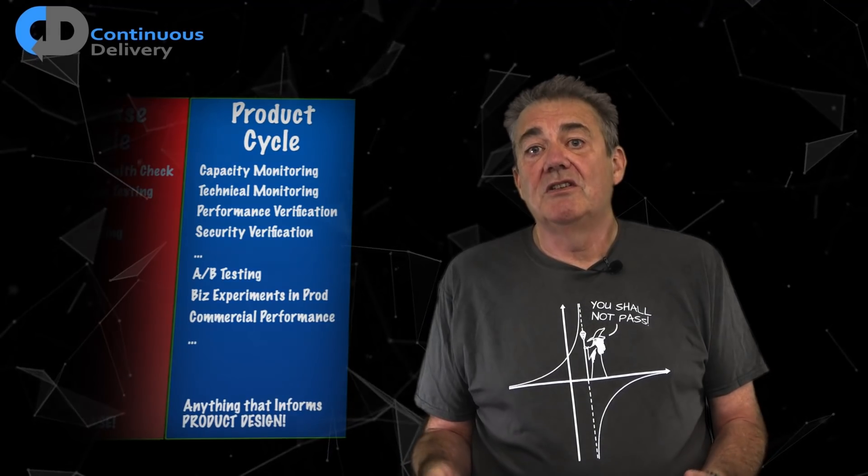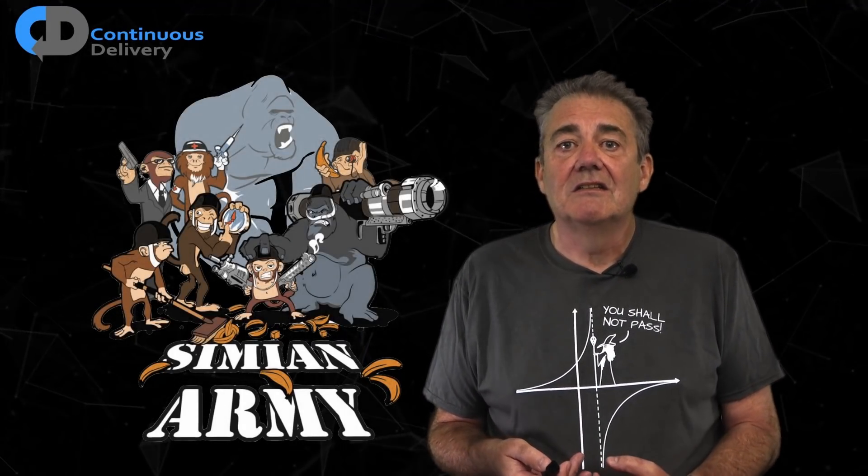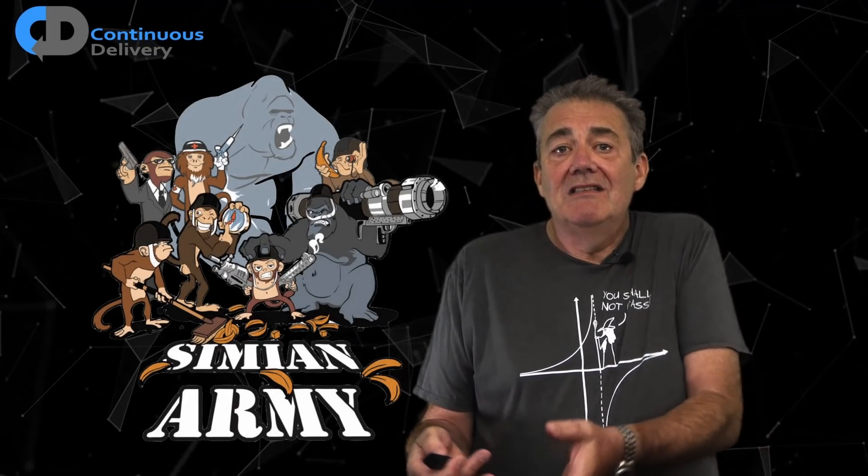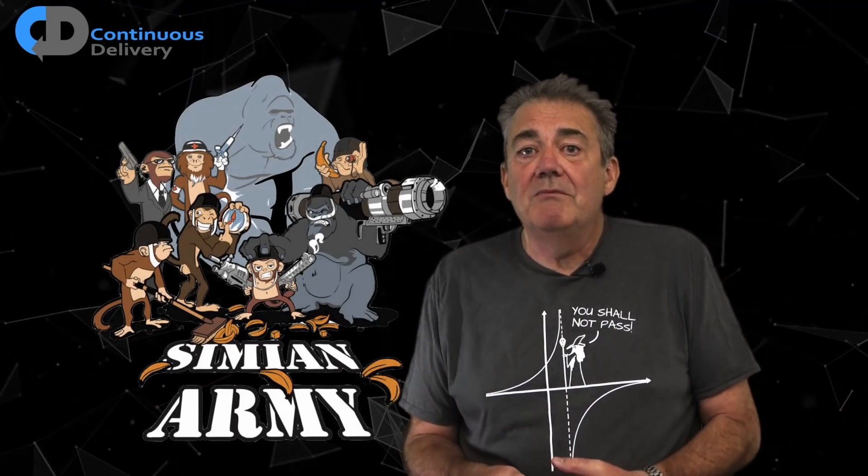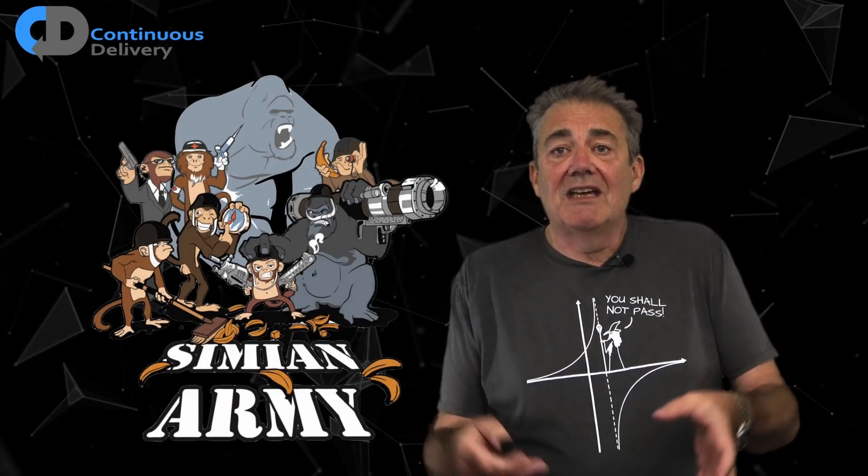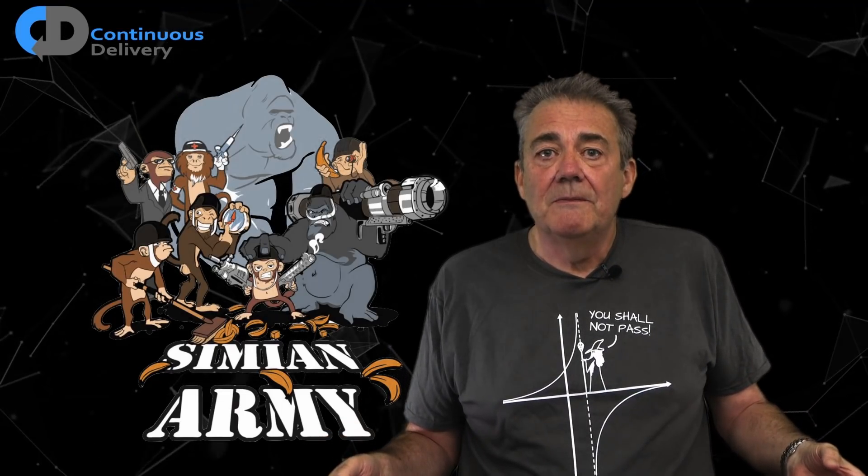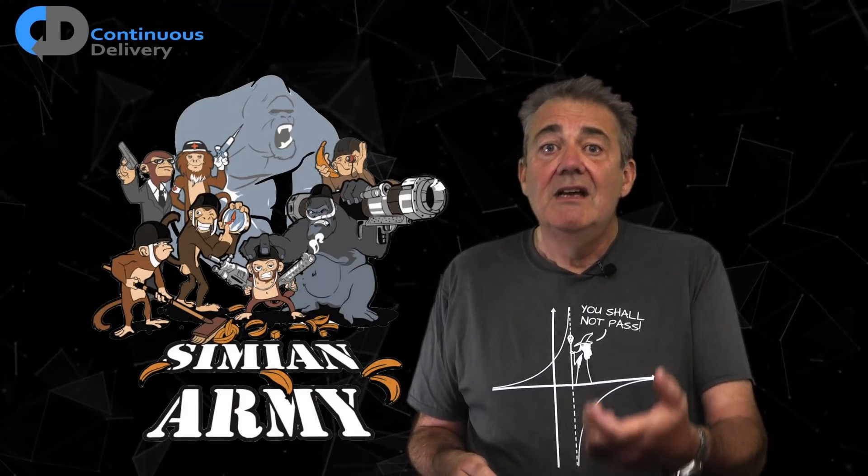The most famous version of this form of in-production testing is probably Netflix again, with their simian army of chaos tests. Netflix have chaos monkeys that randomly break services in production. Latency monkeys that randomly slow things down. Security monkeys that look for holes in production and try to exploit them. And even the chaos gorilla that takes out whole Amazon availability zones. The idea is, if your software can survive this kind of stress, it can survive real outages as well as these artificial ones.